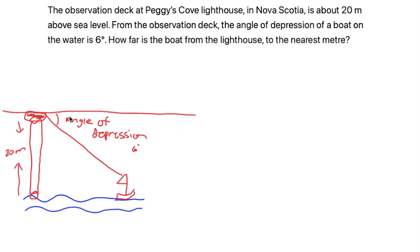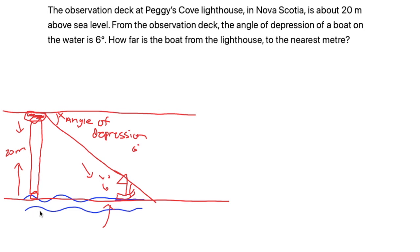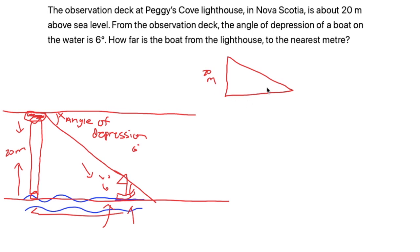Now, what do we know about parallel lines? This line is parallel to the sea level, so if you remember the Z pattern, this angle over here is also 6 degrees — this angle and this angle are congruent. Using this information, we know the angle where the boat is, and we also know the height. They're asking how far is the boat from the lighthouse to the nearest meter? So we have to find this value. To make this into a nicer image, I'm going to draw a smaller triangle on the side, with 20 meters for the height and 6 degrees for the angle.